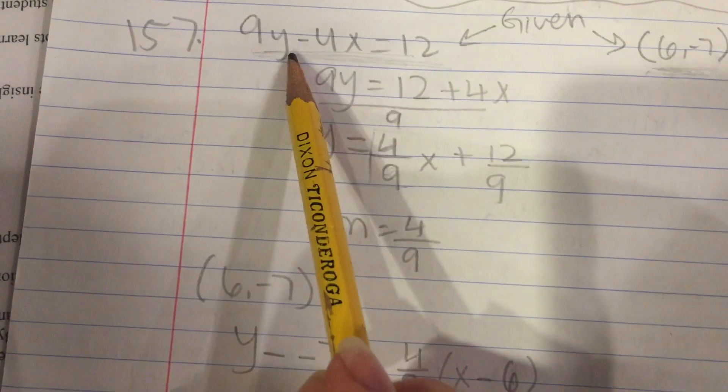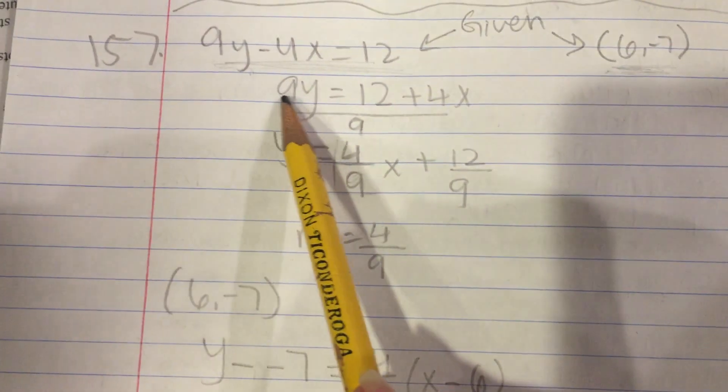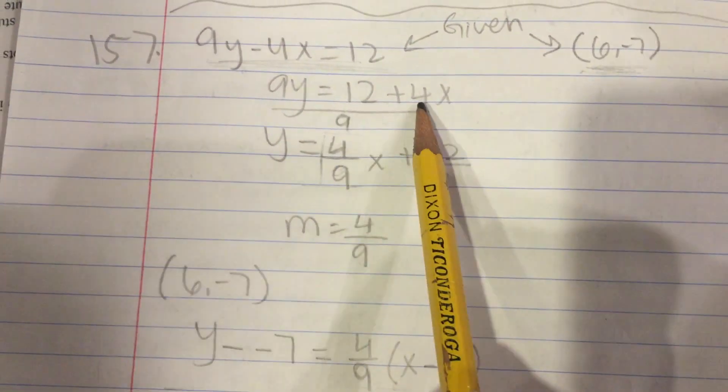To get y alone, you add 4x to both sides and you're left with 9y equals 12 plus 4x.